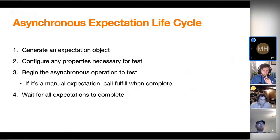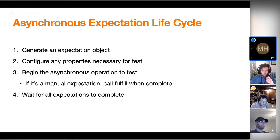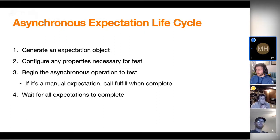In order to do this, you want to generate an object that represents an expectation and then configure any properties necessary for it, such as how many times the test should be fulfilled in order to consider it passed, and whether or not it should actually be considered a failure to fulfill it. Then you want to kick off your asynchronous operation, and assuming it's a manual expectation, once the operation completes, you need to call fulfill. Asynchronous expectations are actually a little bit logically inverted from regular expectations — nothing happening means failure with async, whereas with synchronous you have to manually tell it that it failed.